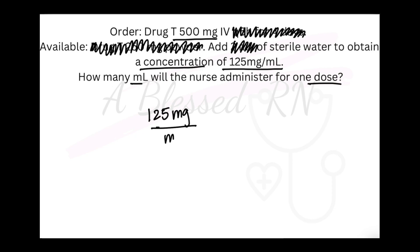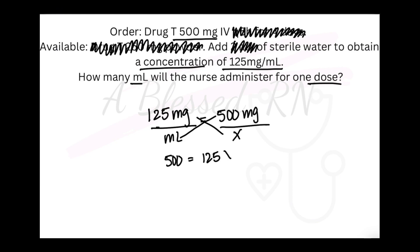125 mg per ml equals 500 mg that's ordered over X, because we are solving for milliliters, which we don't know. So therefore, we'll cross multiply and we will get 500 equals 125X. We want X to be by itself, so we'll divide both sides by 125. Once that 125 crosses out, X is then isolated. 500 divided by 125 is 4, leaving us with 4 ml per dose that the nurse will administer.